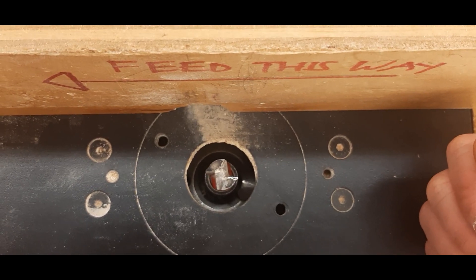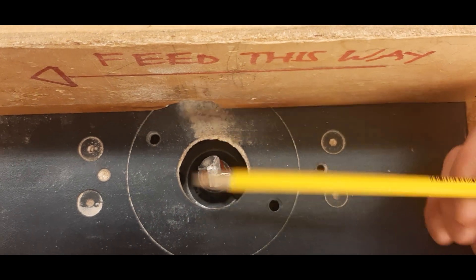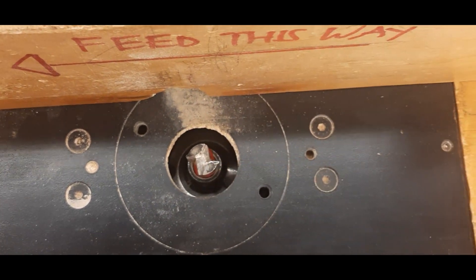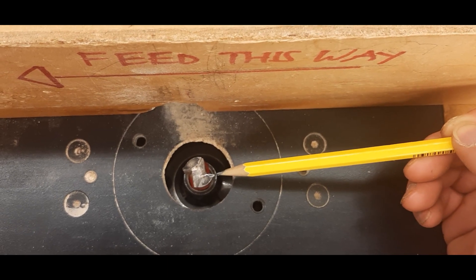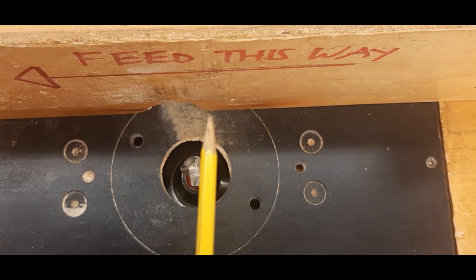Again, we're looking from the bird's eye view. Here's the fence. Here's the router bit. To get the most accurate slot, you want to make sure that this tooth here is facing the fence.